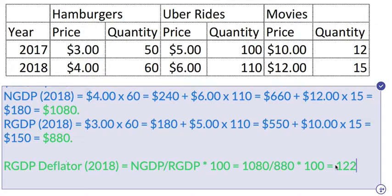It essentially means that since the base year, prices have increased by 22%. The GDP deflator is very important because it is used to take nominal GDP and deflate it — that is, to clean out the effects of inflation from the nominal GDP figures.